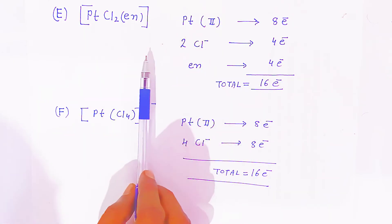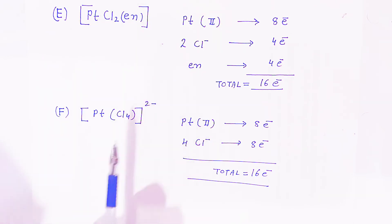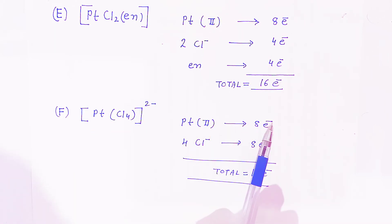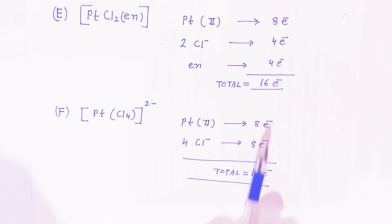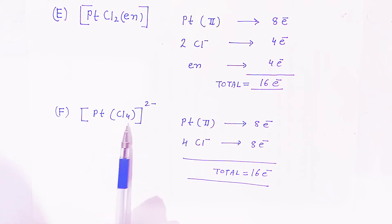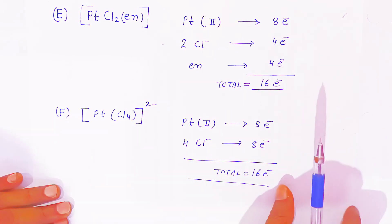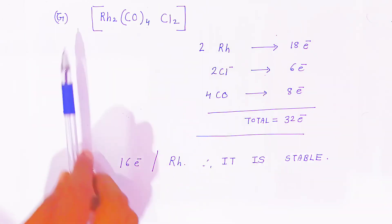For platinum tetrachloride [PtCl₄]²⁻, platinum(2+) has 8 electrons in its outermost orbit. Four chloride ions donate 8 electrons. Adding: 8 + 8 = 16 electrons total in the outermost orbit. These 16 electrons confirm that platinum tetrachloride is a very stable complex.